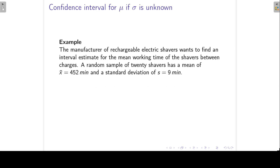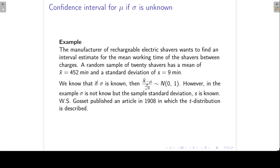The manufacturer of rechargeable electric shavers wants to find an interval estimate for the mean working time of the shavers between charges. A random sample of 20 shavers has a mean of 452 minutes and a standard deviation of 9 minutes. If the population standard deviation sigma is known, then x-bar minus mu divided by the standard error follows the standard normal distribution. However, in this example only the sample standard deviation s is known, but not the population standard deviation sigma.